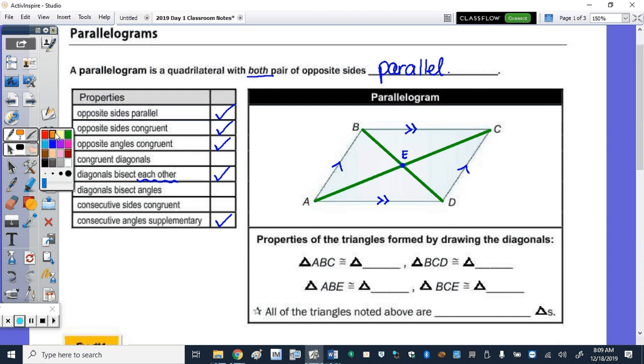Switching colors, both pair of opposite sides are congruent, so BC is congruent to AD, and AB is congruent to CD.